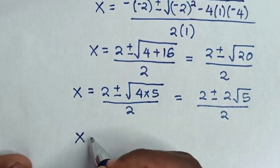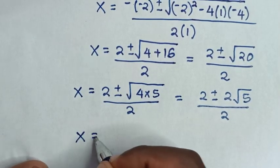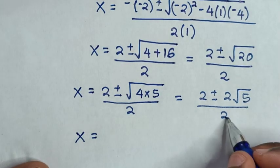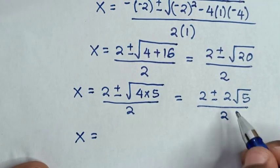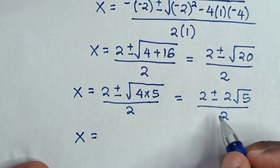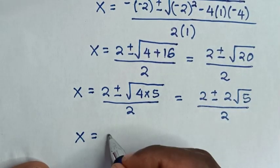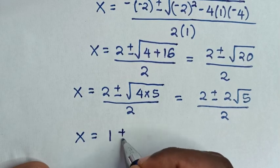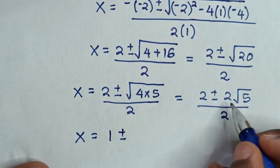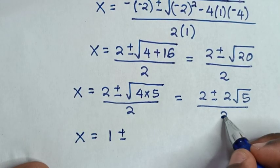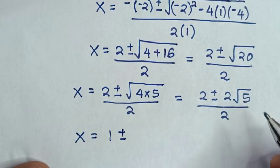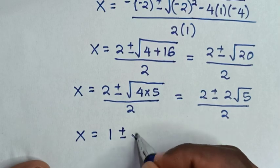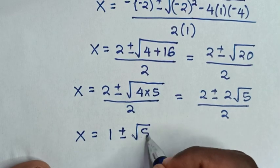Then it will be x is equal to — we divide by 2 in each part — so 2 divided by 2 is 1, plus or minus 2 divided by 2 is 1, times square root of 5, which is square root of 5.